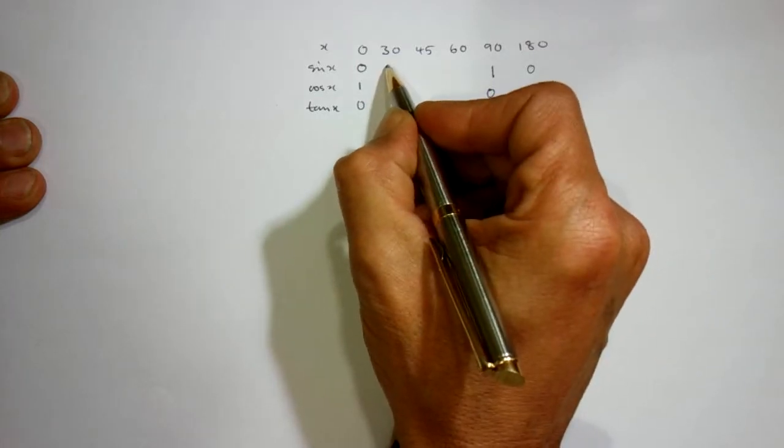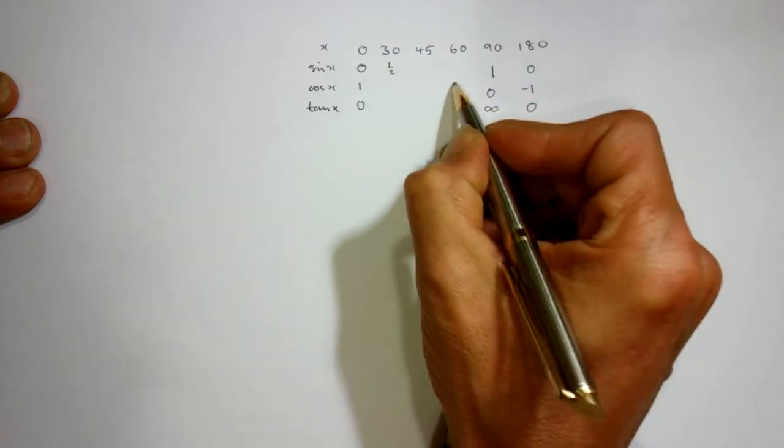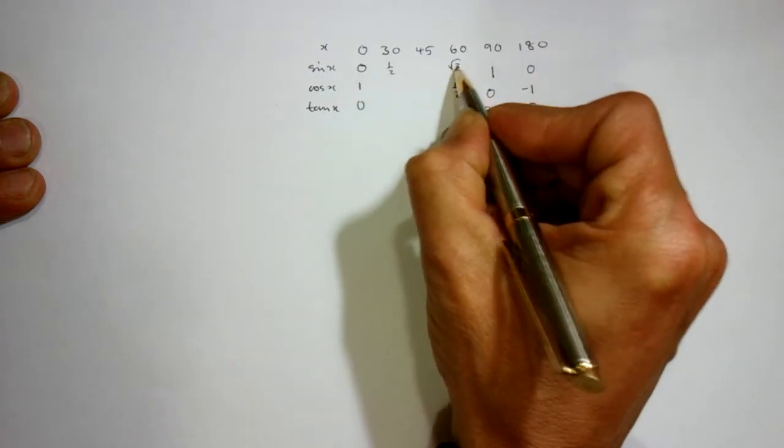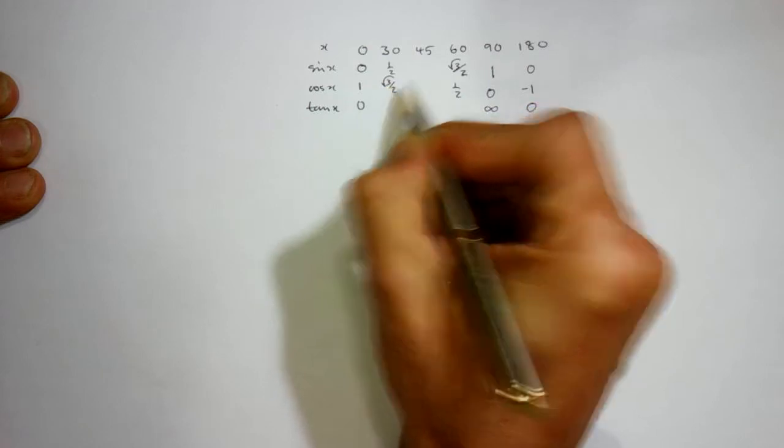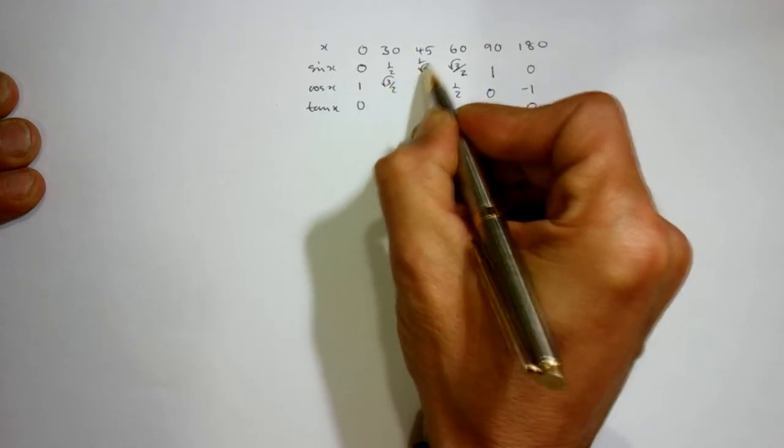Sin of 30 is a half, and that's the same as cos of 60. Sin of 60 is root 3 over 2, and that's the same as cos of 30. Sin of 45 and cos of 45 are the same, 1 over root 2.